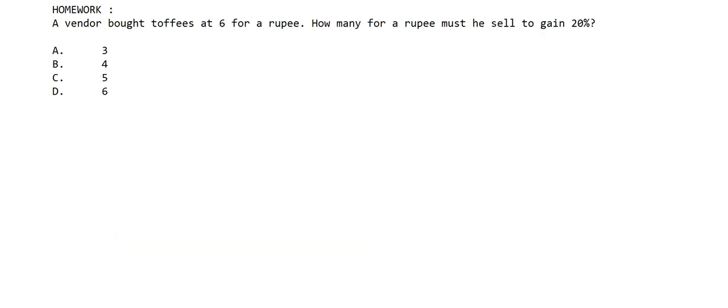Before wrapping up, here is your homework problem: a vendor buys toffees at 6 for a rupee. How many for a rupee must he sell to gain 20 percent? Four options are given — note them down or take a screenshot. Let me know your answers in the comment section. Don't forget to subscribe, press the bell icon for daily updates, and like, comment, and share the video. Thank you.